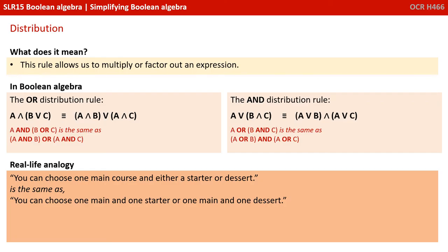Distribution: this rule allows us to multiply or factor out an expression. Again, there's an OR and an AND version. With the OR version, we can say A AND (B OR C) is the same as (A AND B) OR (A AND C). With the AND version, we can say A OR (B AND C) is the same as (A OR B) AND (A OR C). A real life analogy: 'you can choose one main course and either a starter or dessert' is the same as 'you can choose one main course and one starter, or one main course and one dessert.'